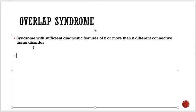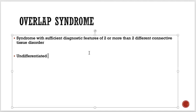Overlap syndrome patients show complete features of two or more different connective tissue disorders. Of course, we have to treat those disorders. Another related concept is undifferentiated autoimmune disorder — these are patients who have some evidence, like the presence of auto-antibodies in the blood.